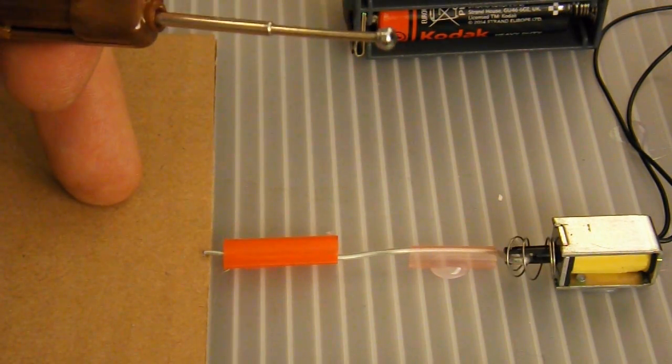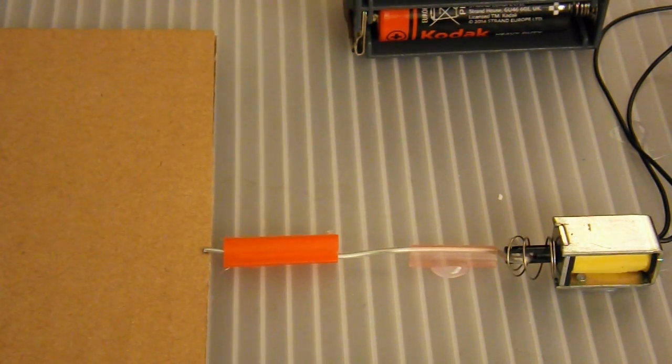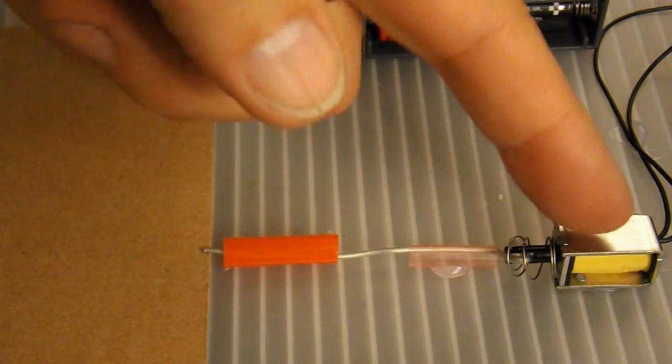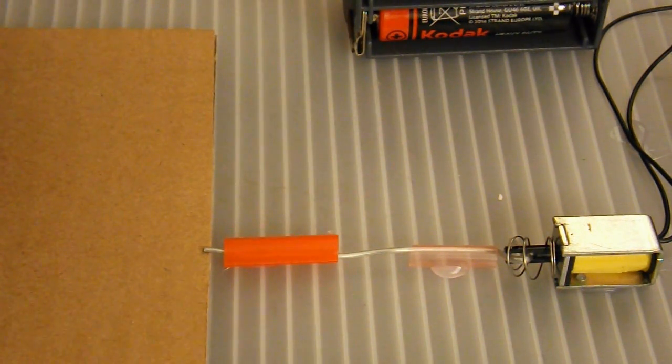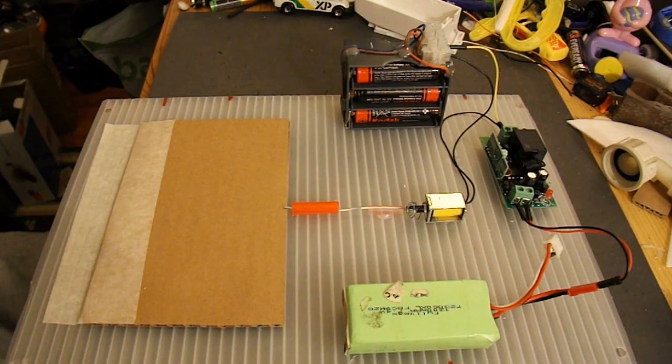Obviously, I'm just doing this for demonstration purposes. You would have a proper door lock there, and probably a bigger solenoid. But this is just to demonstrate the principle. Anyway, we'll zoom back out again. So what have we got?